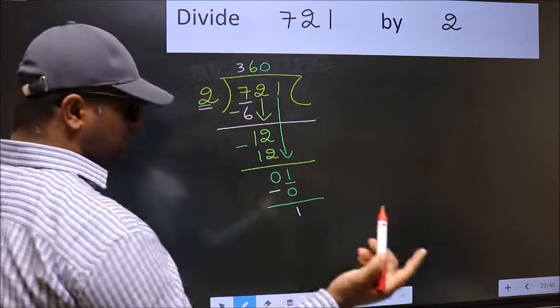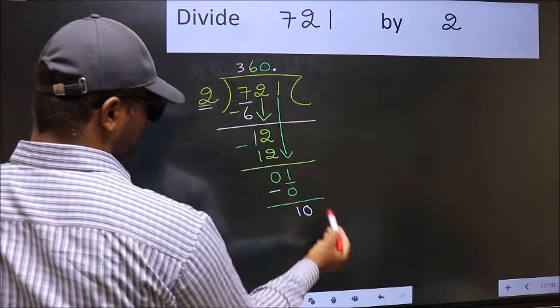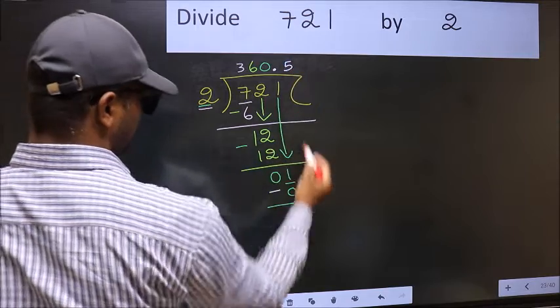So, now, we should put a dot and take 0. So, 10. When do we get 10 in 2 table? 2, 5, 10.